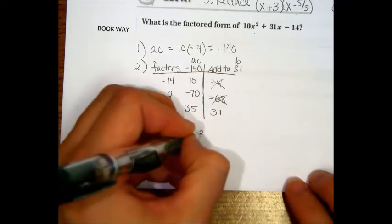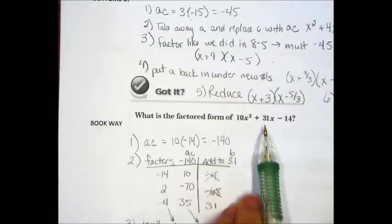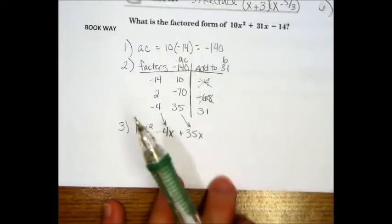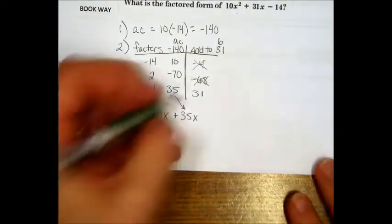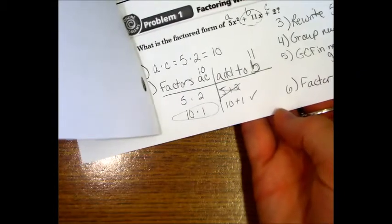And we are going to subtract 4x. And that came from right above. And then we are going to add 35x. That is correct. And that replaced our original 31 because negative 4 and 35 is 31.